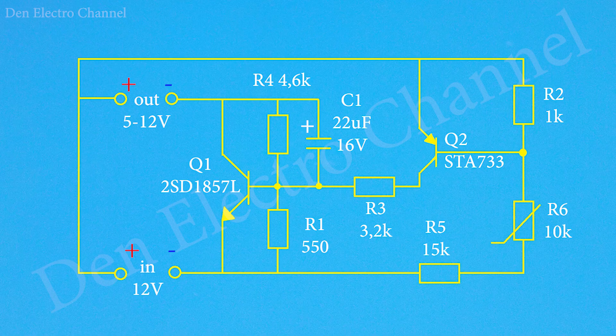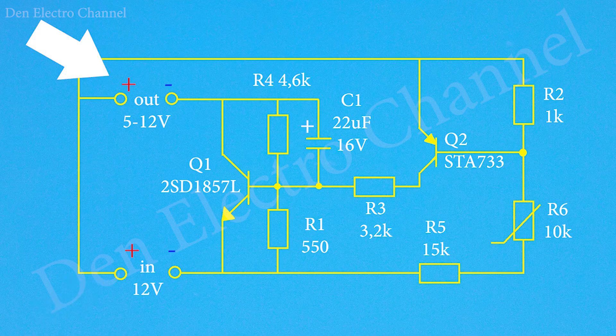The thermostat circuit looks like this. Current from the power supply with a voltage of 12 volts is supplied here. The output is here, the fan is connected here. Depending on the temperature, the output voltage changes from 5 to 12 volts.